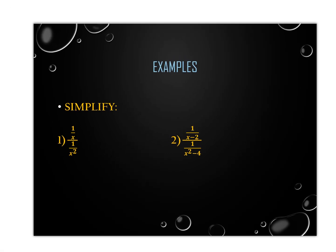Let's start by understanding complex fractions. Looking at 1 over x all over 1 over x squared - fractions really are division problems. So this is 1 over x divided by 1 over x squared. In simplest terms, it's just a division problem, which you solve by doing stay, change, flip, and simplify. I have an x and an x squared, so I can reduce to get x over 1, or just x.